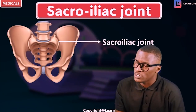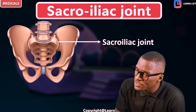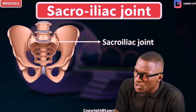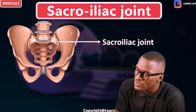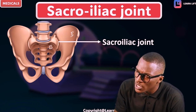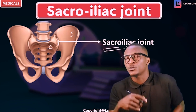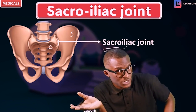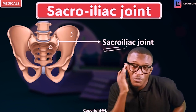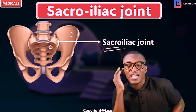So this is the sacroiliac joint. This is the sacrum, and this is the ilium. Where both of them meet is called the sacroiliac joint. Take note that we have the sacroiliac joint. We are listing the joints of the lower limb.